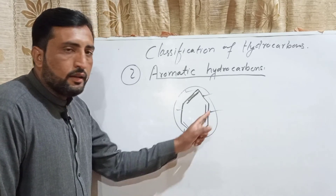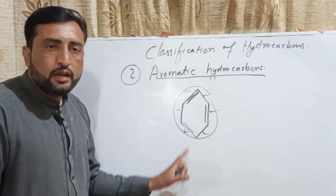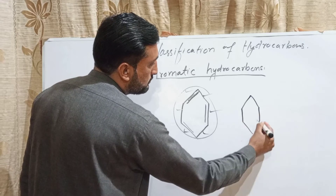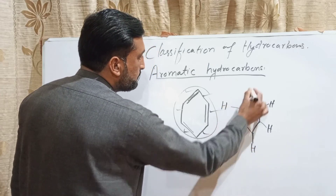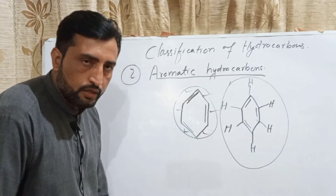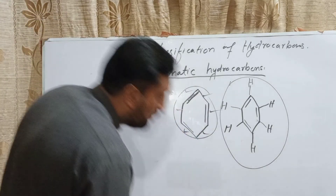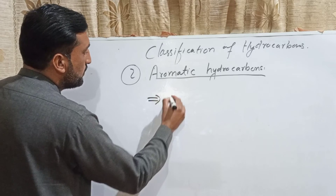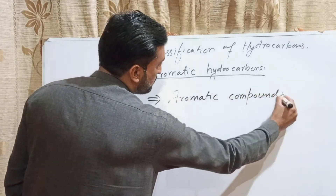Aromatic hydrocarbons are different from aliphatic hydrocarbons: aliphatic can have straight chain or ring structures, but aromatic hydrocarbons only have ring structures based on the benzene ring. Aromatic compounds do not exist in straight or open structures.